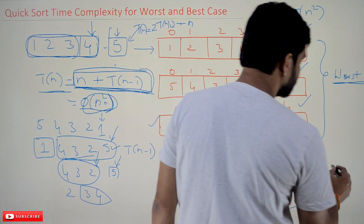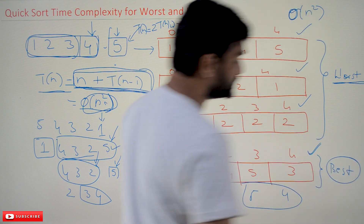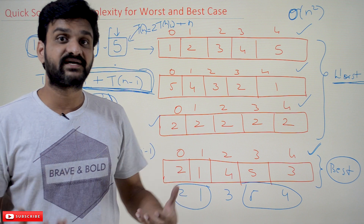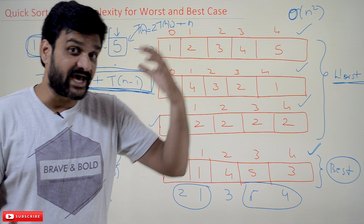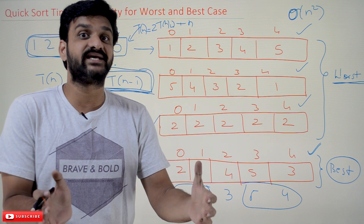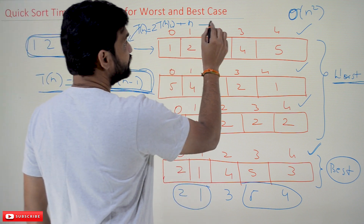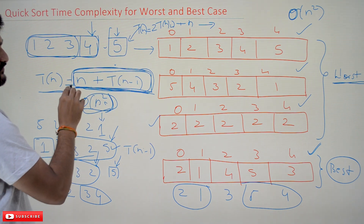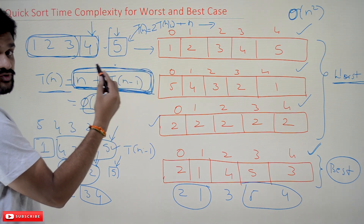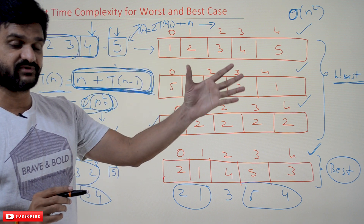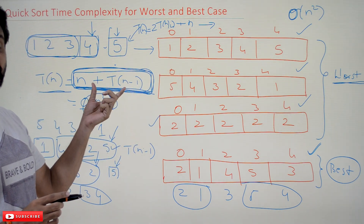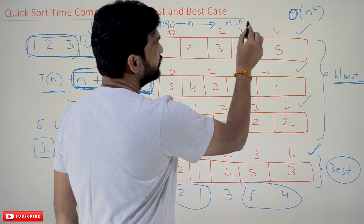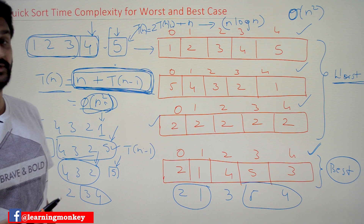In this best case recurrence T(n) = 2T(n/2) + n, the n term represents the time taken by the partition algorithm. Note that this recurrence cannot be solved using the Master's method — you need to use the substitution method or a recursion tree. The solution gives an efficiency of n log n, which is the same as merge sort.